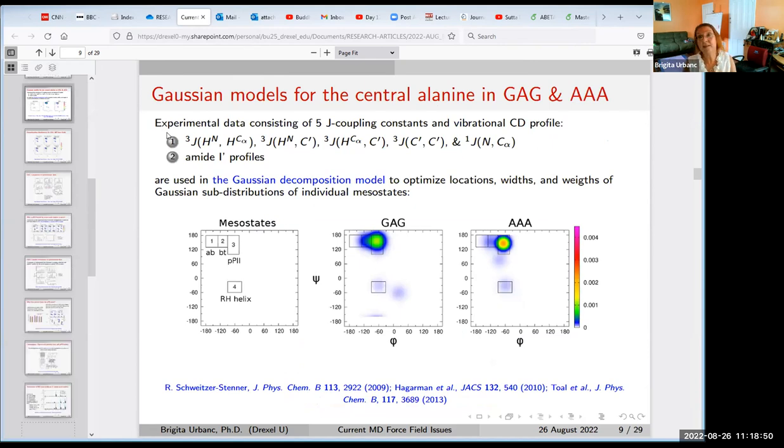Here is a complicated slide, but what I want to say is the following. We have two types of spectroscopic data for, for example, for central alanine in GAG or in three alanine peptide. We have five J coupling constants—this is NMR data—and we have amide one prime profiles. All of these data are very sensitive to phi and psi angles.